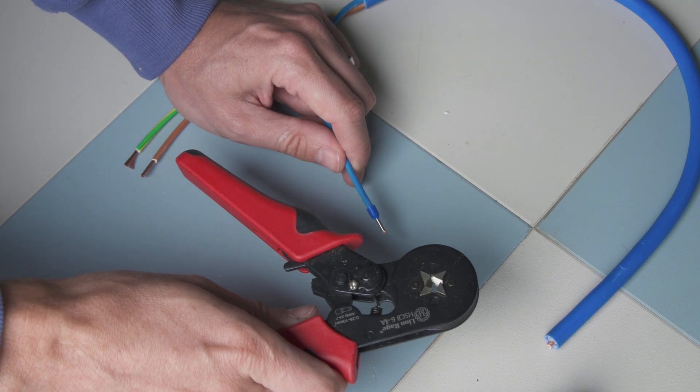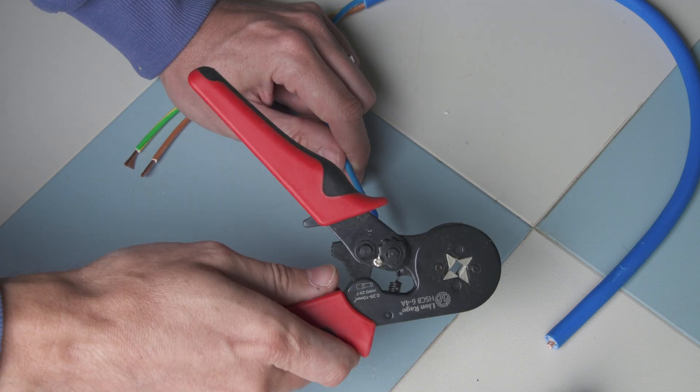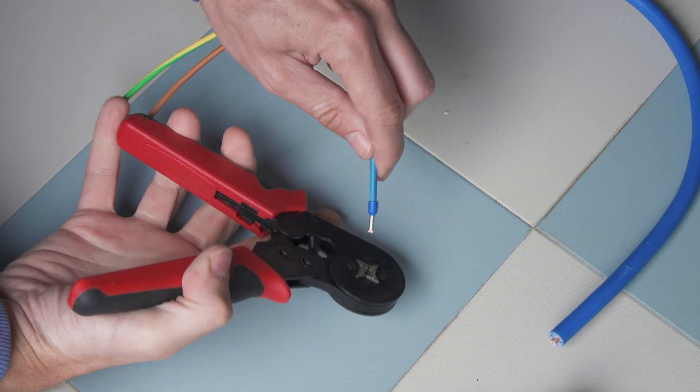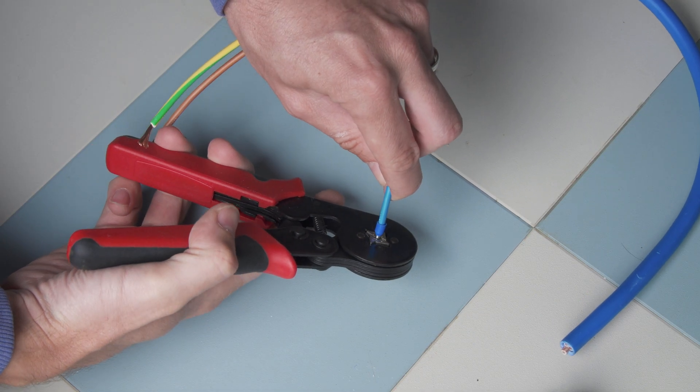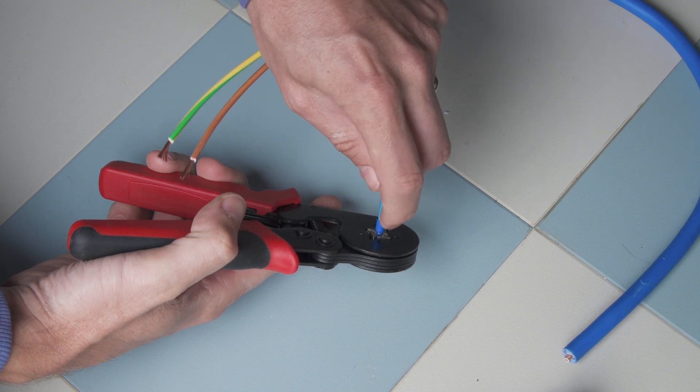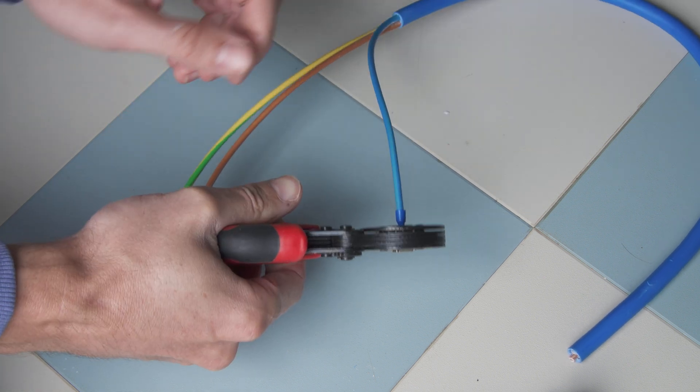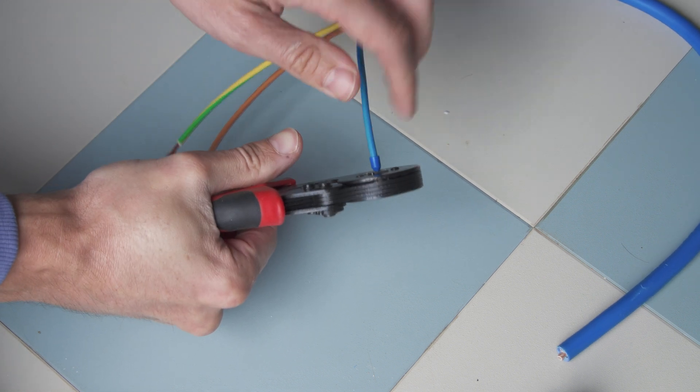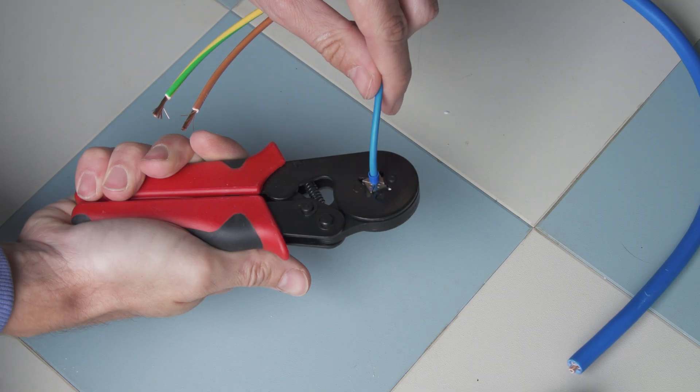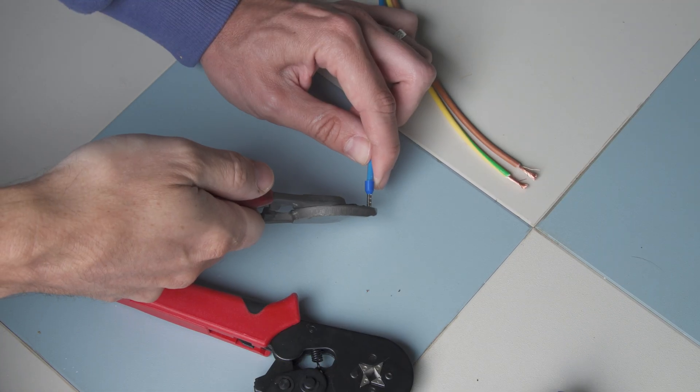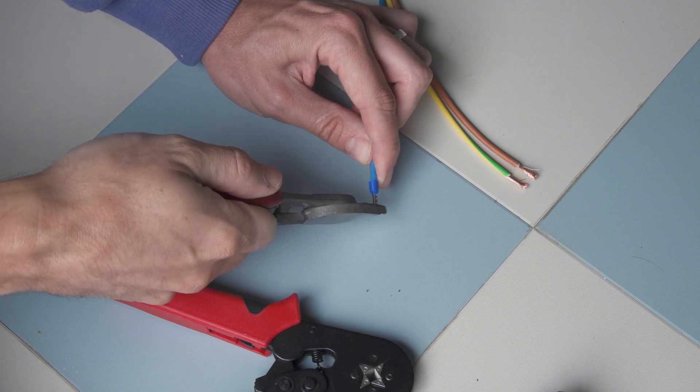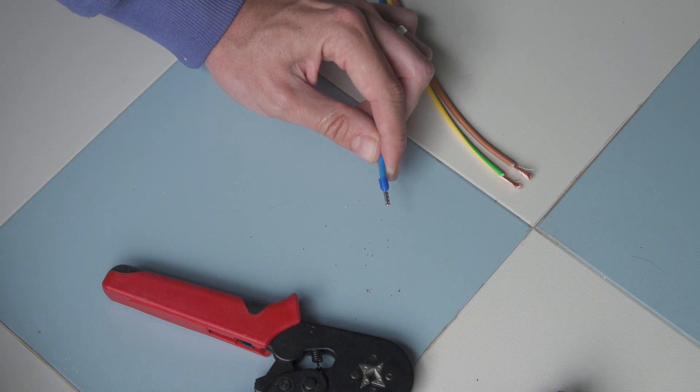What I'm going to do now is grab my ferrule crimping tool which looks like this and I'll leave a link in the description for one of these. I'm going to place my cable in like so until that tapered part is butted all the way up to the end and just tighten down and then it should release once you've pushed the handle all the way in. Cut away any excess copper strands and there you have it.